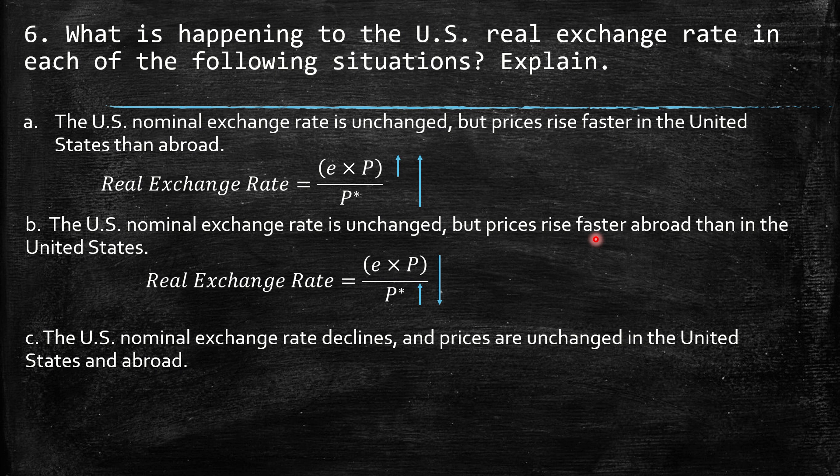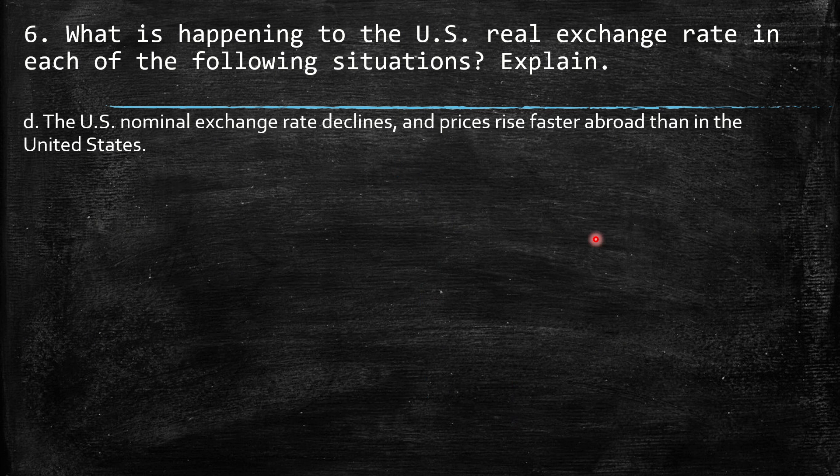Part C: the US nominal exchange rate declines and prices are unchanged in the United States and abroad. Here we have a decrease in the nominal exchange rate E, so as a consequence we have a decrease in the real exchange rate.